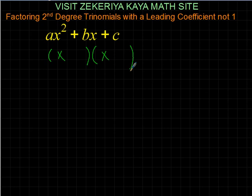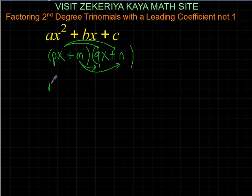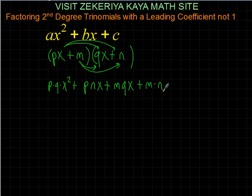To have a leading coefficient, one of them should have — or both of them may have — some other numbers before them, like P and Q: PX and QX. Like the previous one with leading coefficient 1, let's add some other numbers and see what happens when we multiply these two binomials. PX times QX gives P times Q times X squared, plus PX times N, plus M times QX, and the last one M times N.